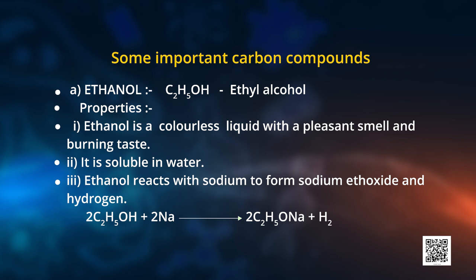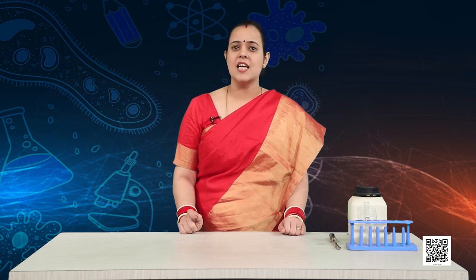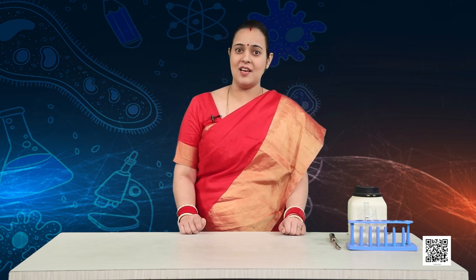Our first important compound is ethanol, with formula C₂H₅OH, which indicates the presence of an OH group. Ethanol is a colourless liquid with a pleasant smell and burning taste, and it is soluble in water. Consuming alcohol affects the central nervous system, and an individual may not realize that his or her sense of timing and muscular coordination gets seriously impaired.